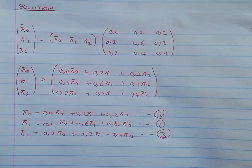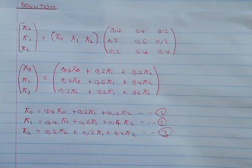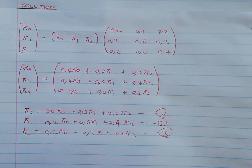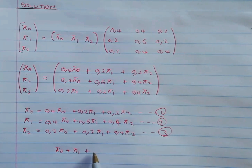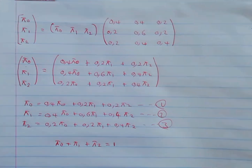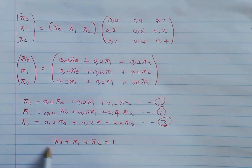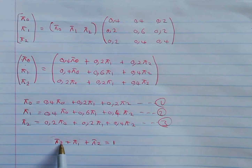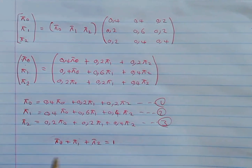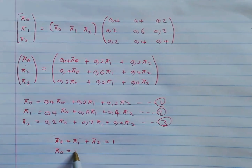Before we proceed, recall that the normalization condition requires π₀ + π₁ + π₂ = 1. We are going to solve for π₀ from this equation and substitute into equations 1 and 2. So: π₀ = 1 − π₁ − π₂.